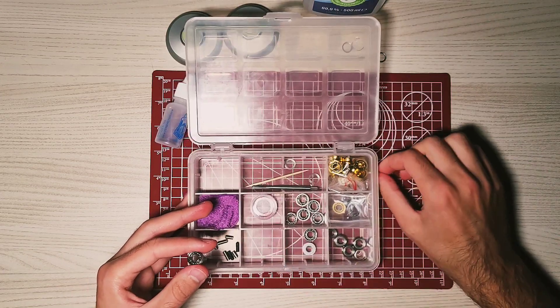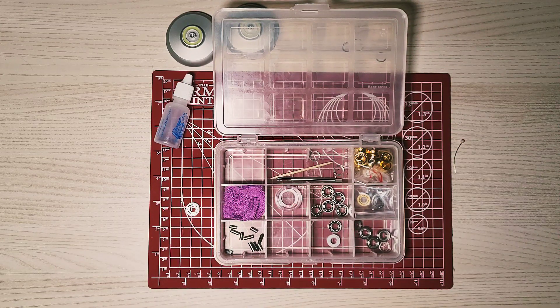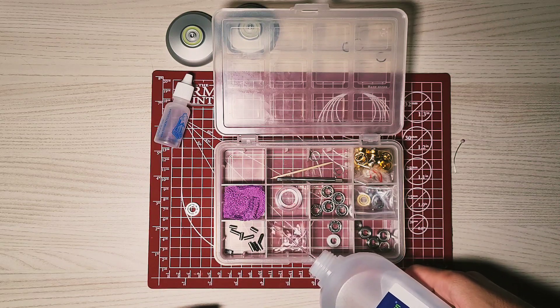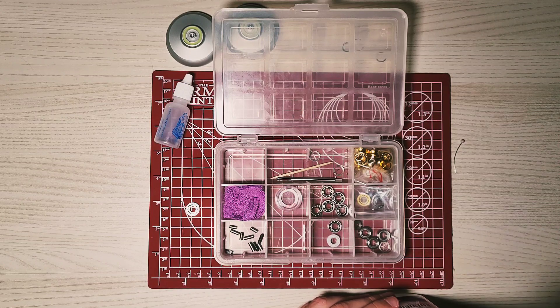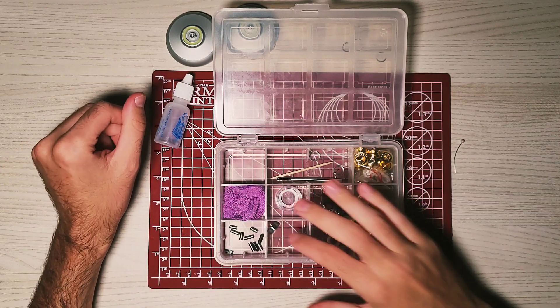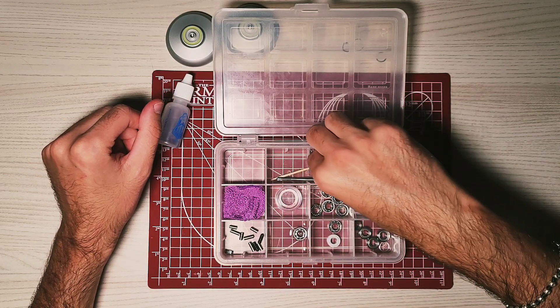Next step is to pour some isopropyl into the designated container, just a thin layer of alcohol, and place the bearing in.